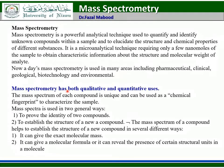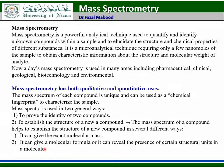Mass spectrometry has both qualitative and quantitative uses. The mass spectrum of each compound is unique and can be used as a chemical fingerprint to characterize the sample. Mass spectra are used in two general ways: to provide the identity of compounds and to establish the structure of a new compound. The mass spectrum can give the exact molecular mass, a molecular formula, or reveal the presence of certain structural units in a molecule.